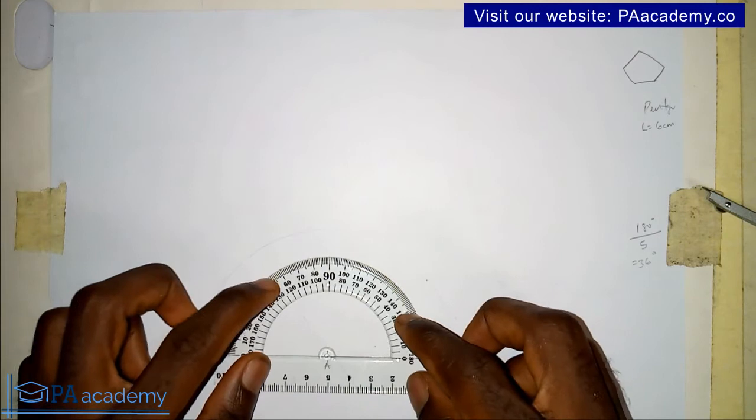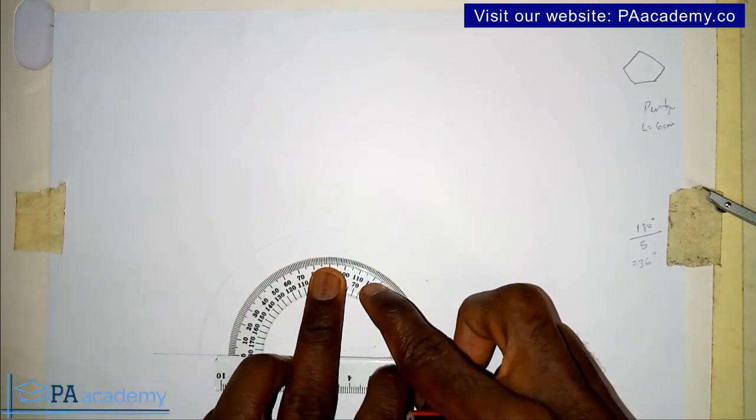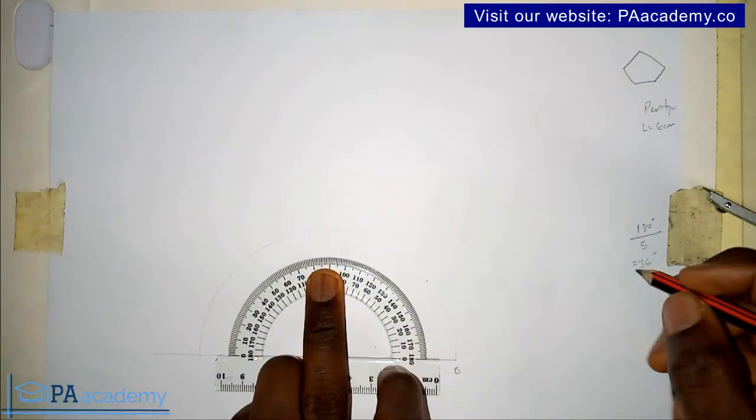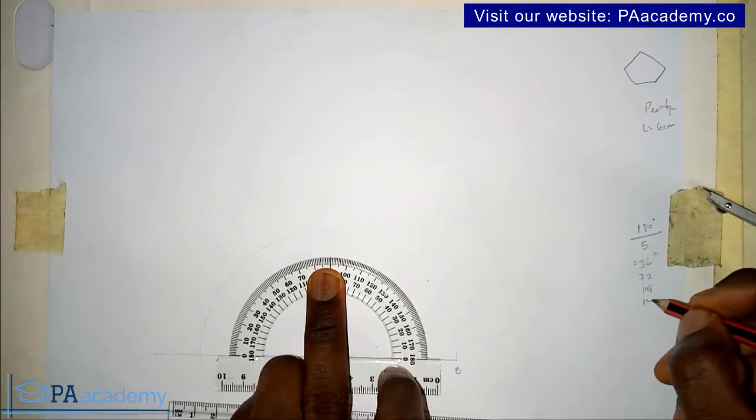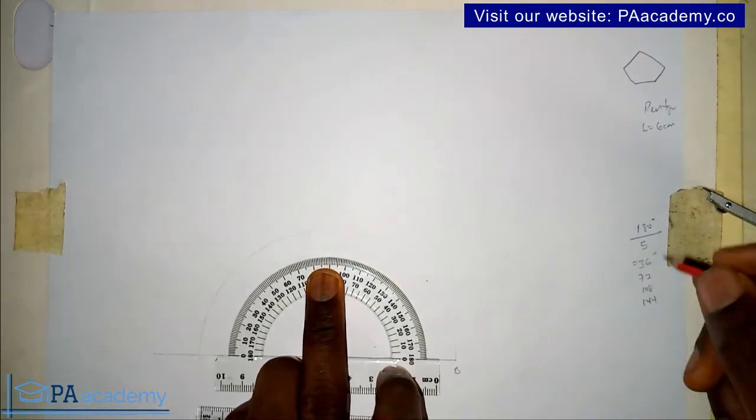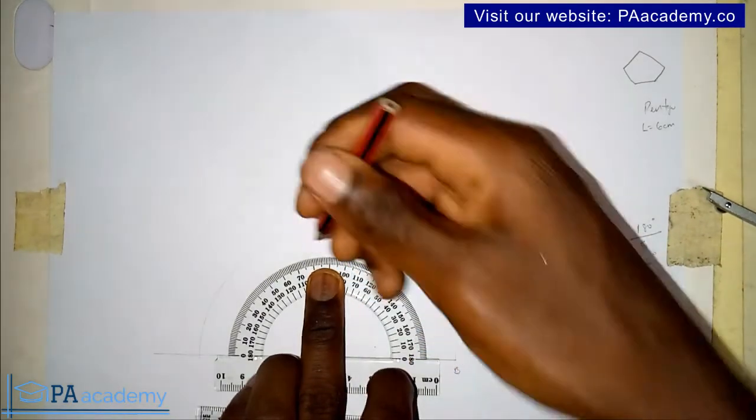When you are doing it, make sure you set up your protractor properly. I'll be marking it at 36 degrees, 72 degrees, 108 degrees, 144 degrees. This is addition of 36.